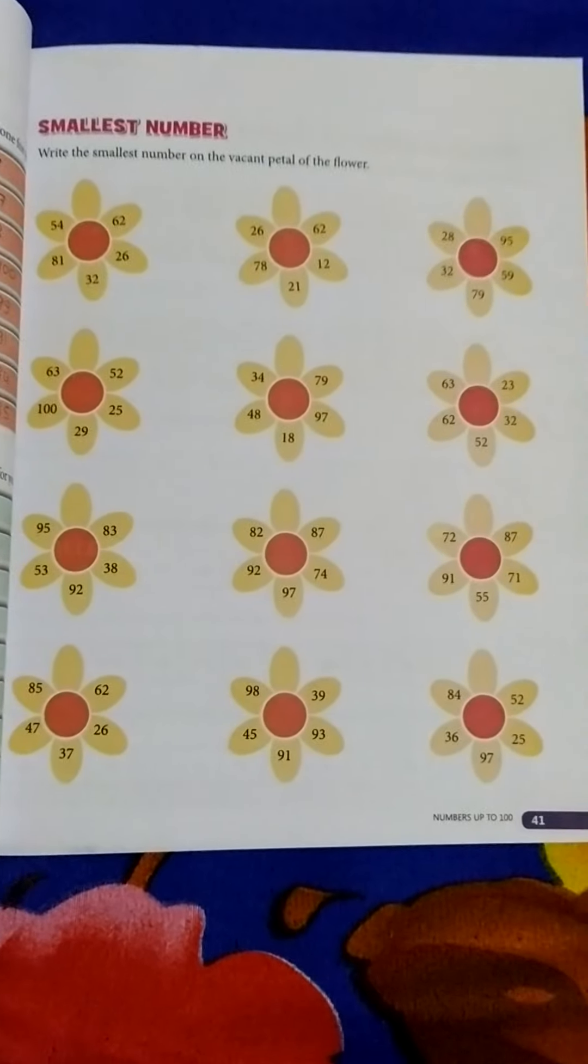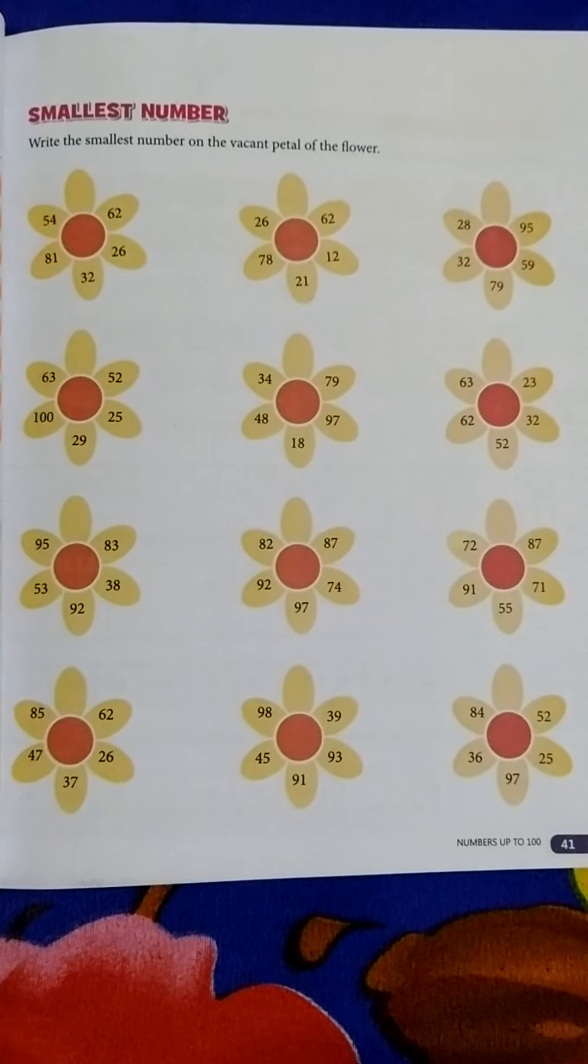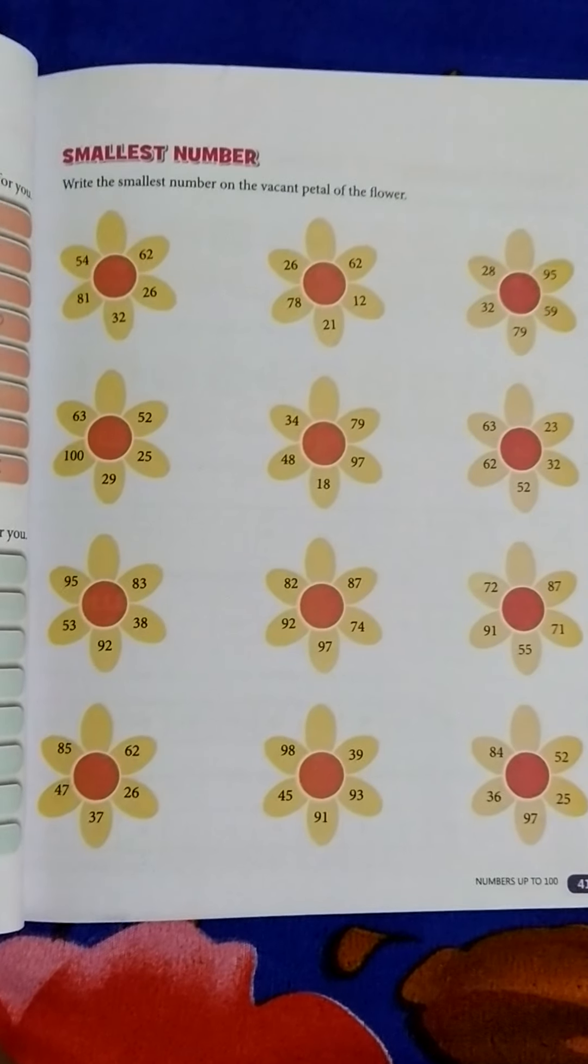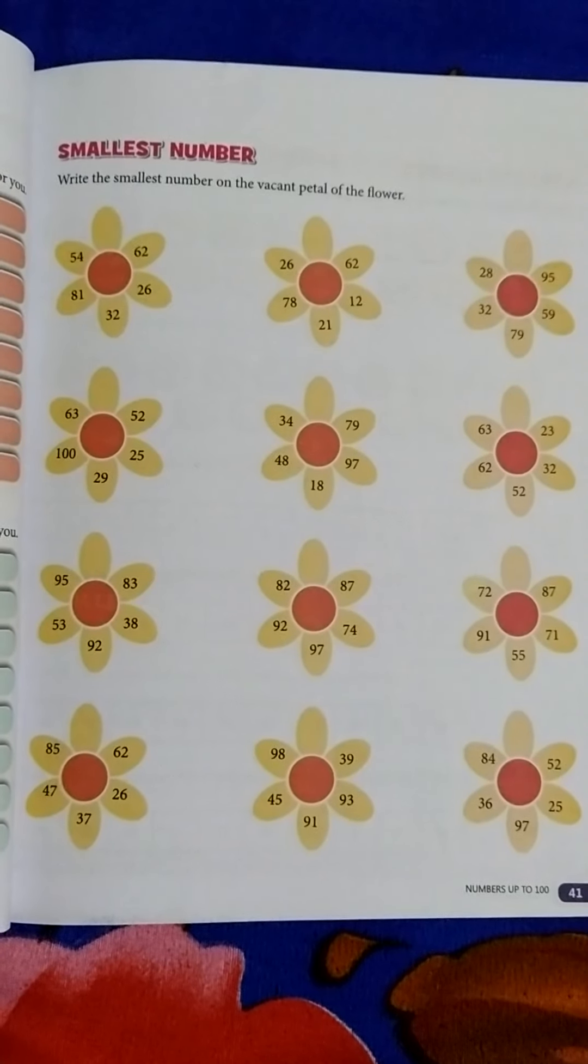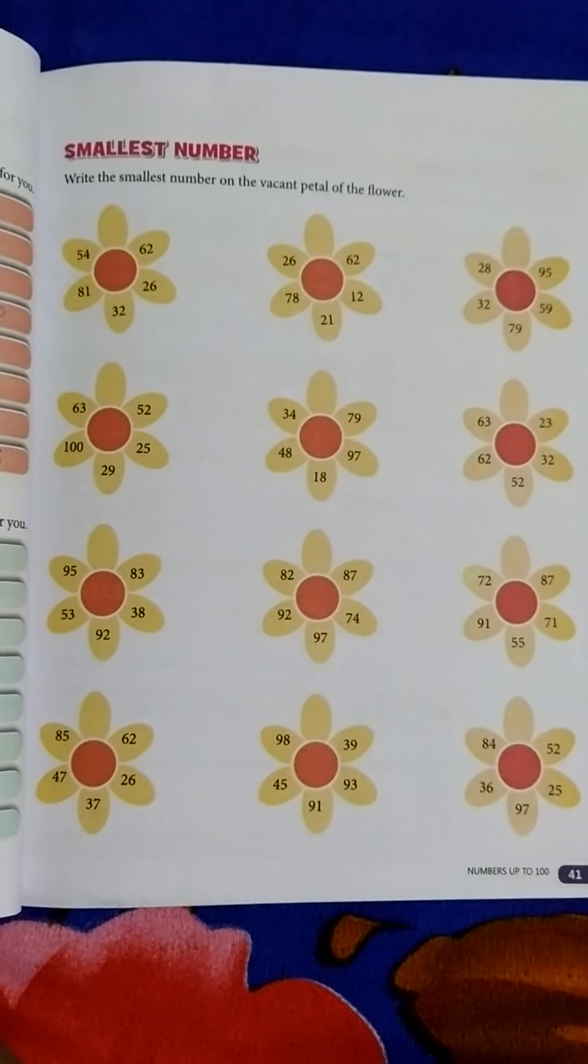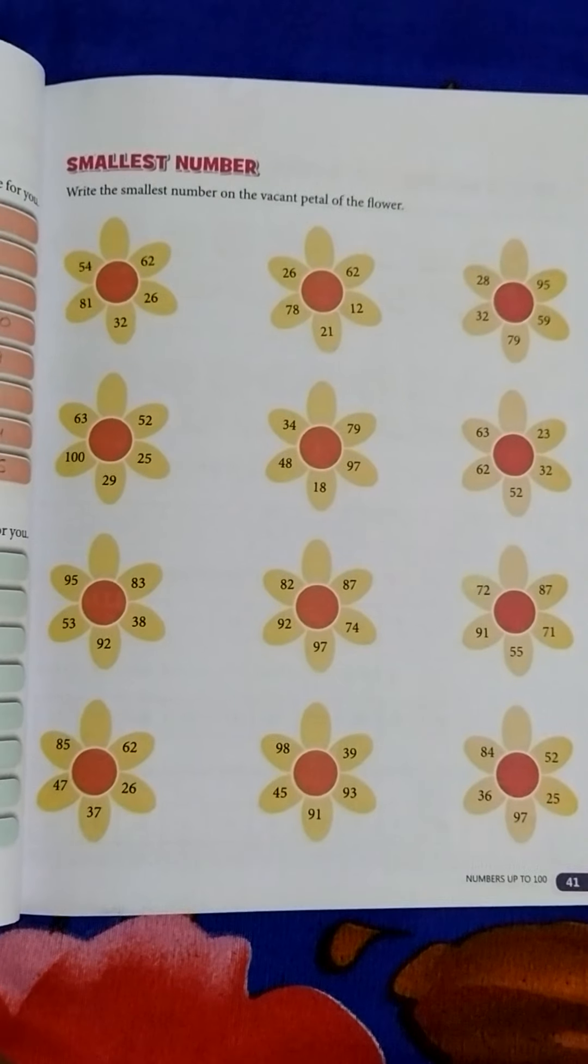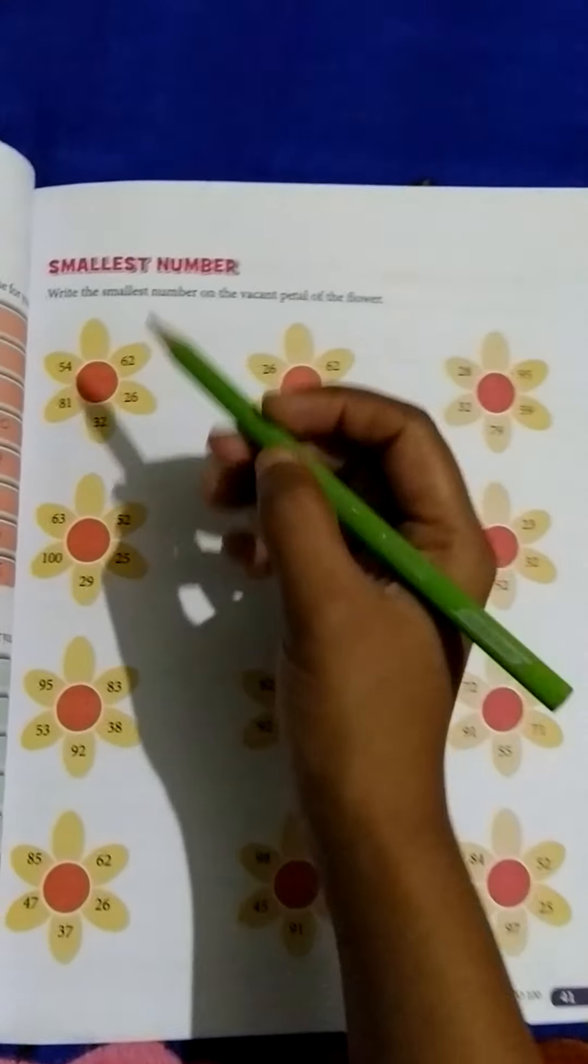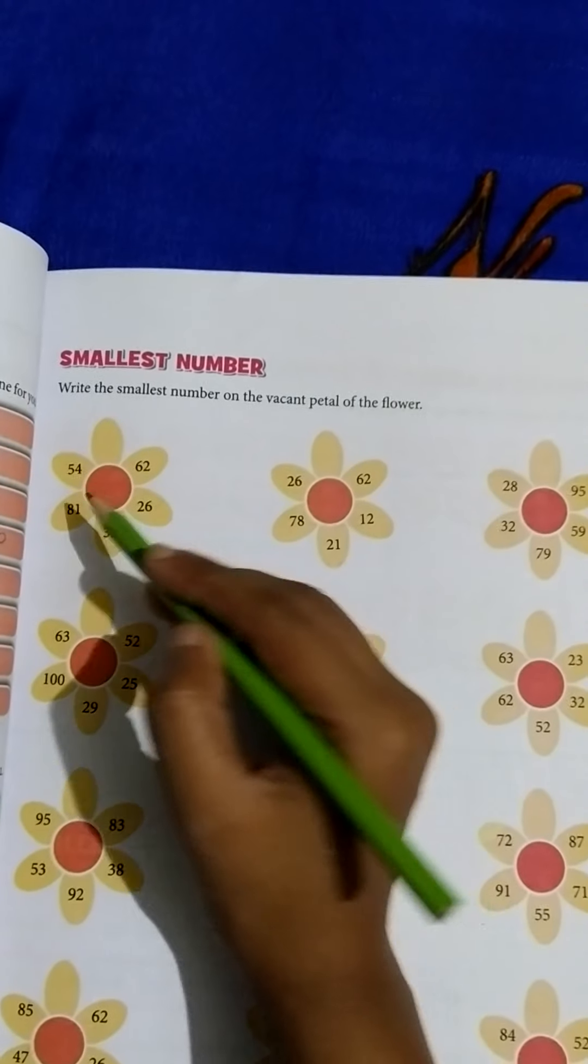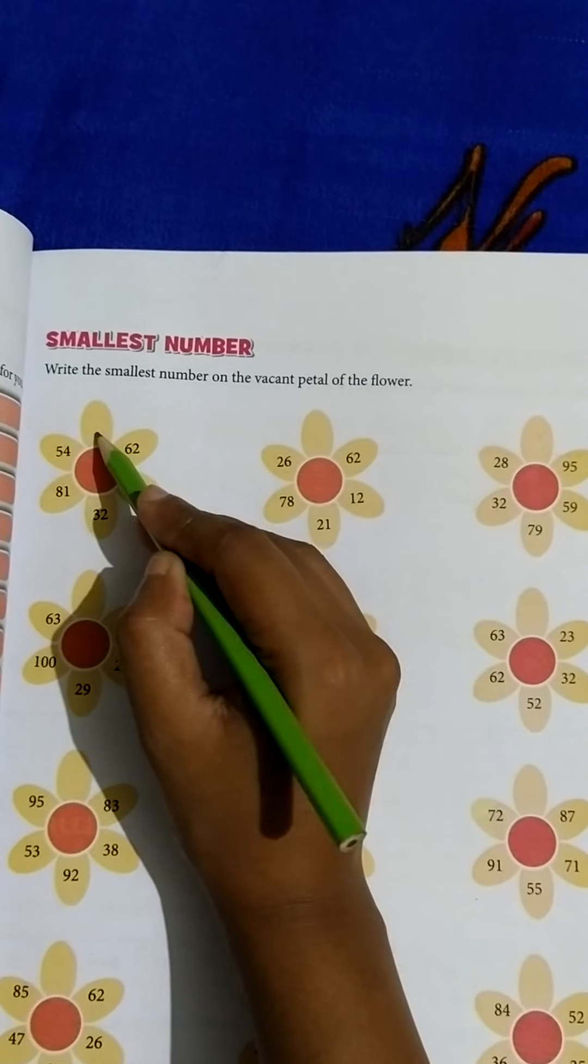Smallest number. Write the smallest number on the vacant petal of the flower. There is given a flower and it has 6 petals. In 5 petals there are given numbers. You have to choose the smallest number in these 5 numbers and 1 petal is blank. You have to choose the smallest number from these petals and write the smallest number here.